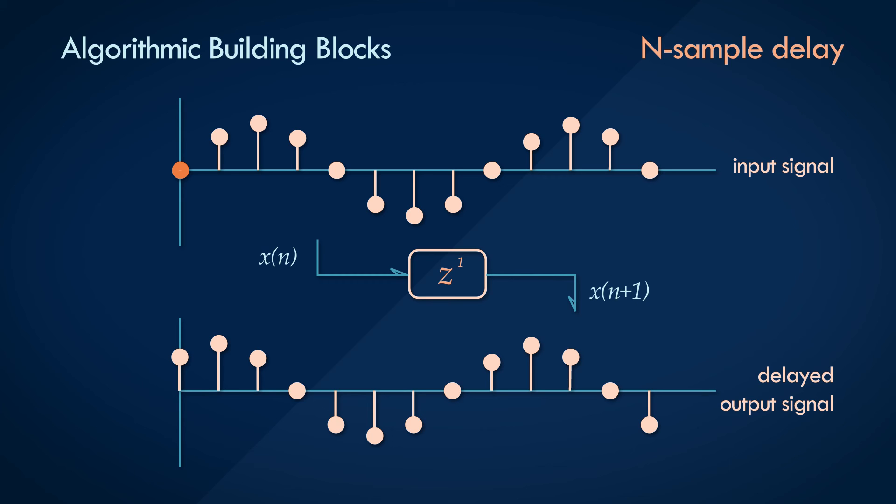This is a strange notation, right? How could you have a positive delay towards the future? The answer is that you can't for real-time signal processing. In real-time processing, you never know what the next sample is going to be. However, in non-real-time processing, in audio files for example, you do know what the future samples are because they're all in the file. Anyway, we won't be looking at positive delays in filtering.